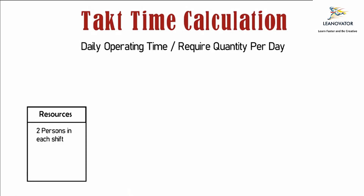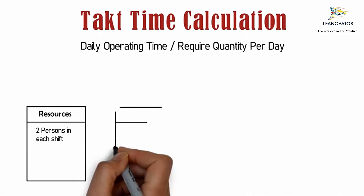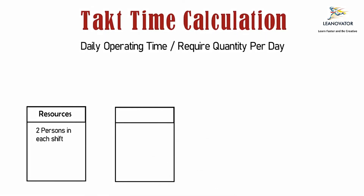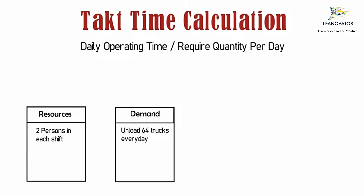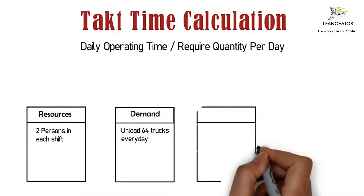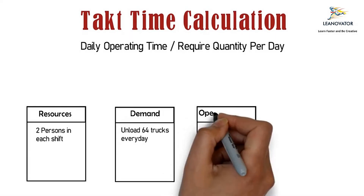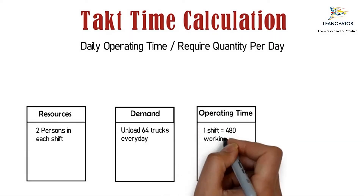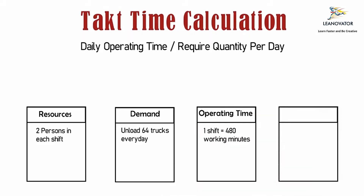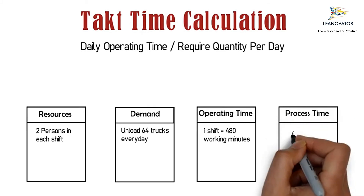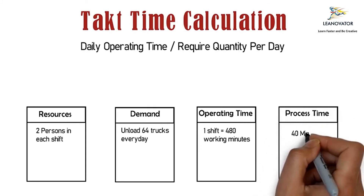Let's take an example. There are two persons per shift. Customer demand is to unload 64 trucks per day. There are two shifts per day, each of 480 minutes per shift. The process time to unload a truck is 40 minutes.